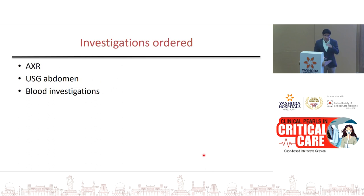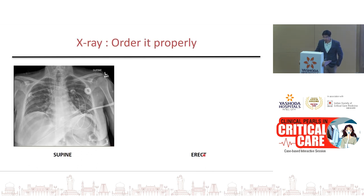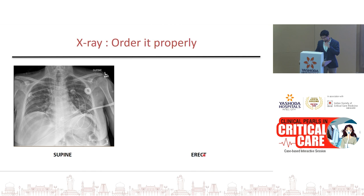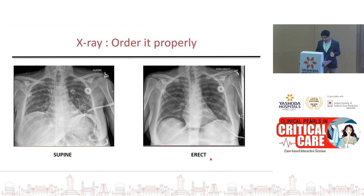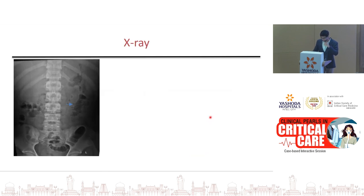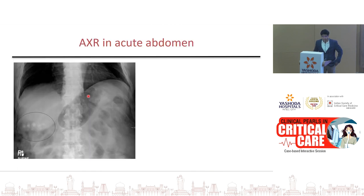In the emergency setting we order abdominal X-ray, ultrasound abdomen, and blood investigations. When ordering an X-ray, please specify the proper view — supine, erect, PA, or AP. For example, in a patient with abdominal pain, an X-ray done in supine may miss free air, but when done in erect you can see air under the diaphragm. In the index case X-ray we can see a sentinel loop of dilated small bowel due to local inflammation. Other X-ray findings can include calcified gallstones or dilated small bowel loops with multiple air-fluid levels confirming acute small bowel obstruction.